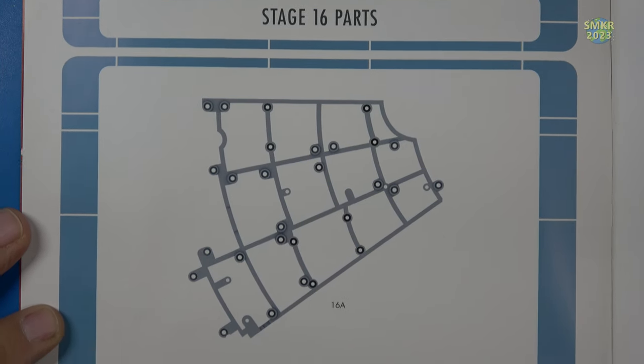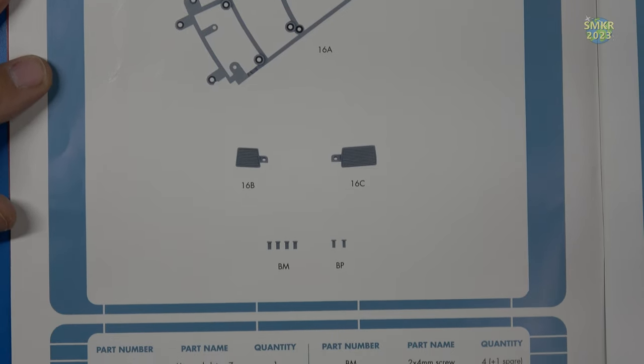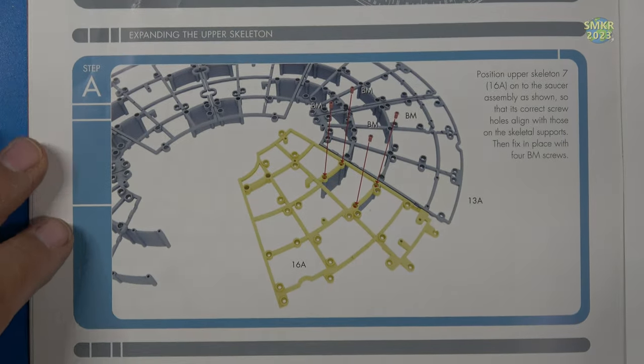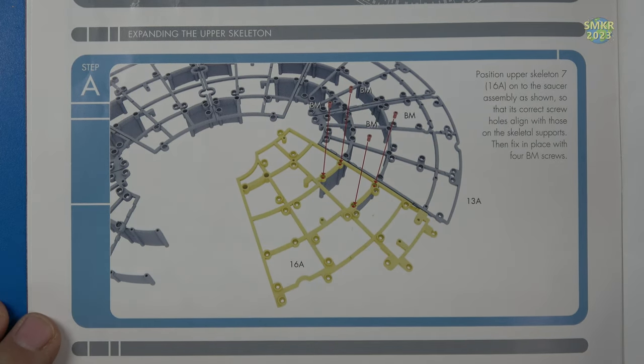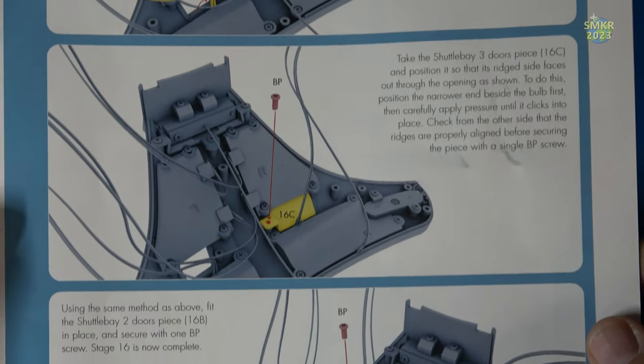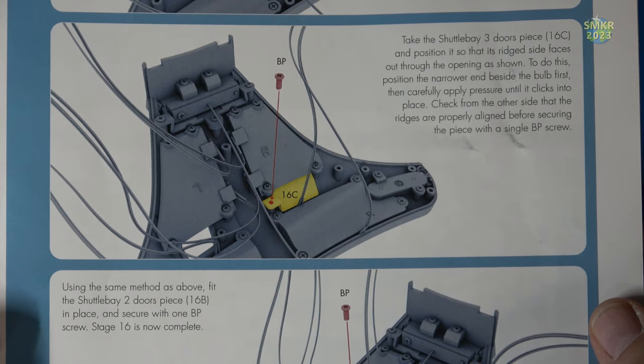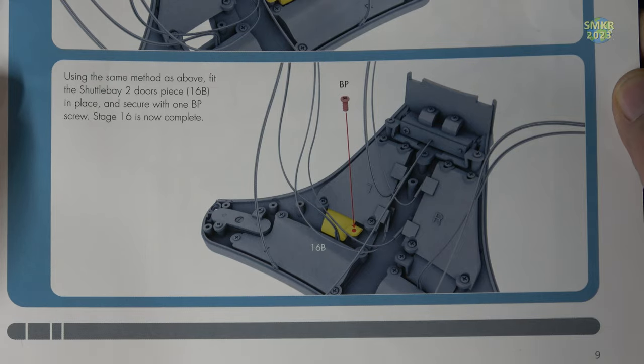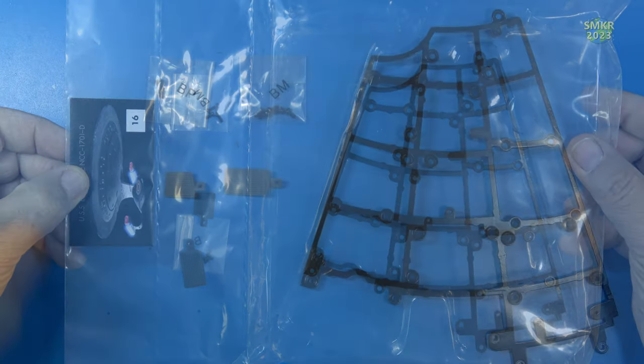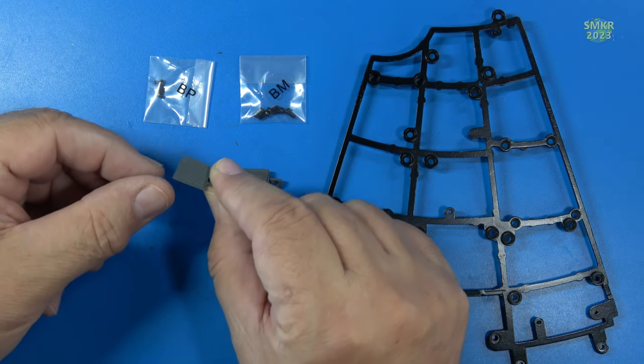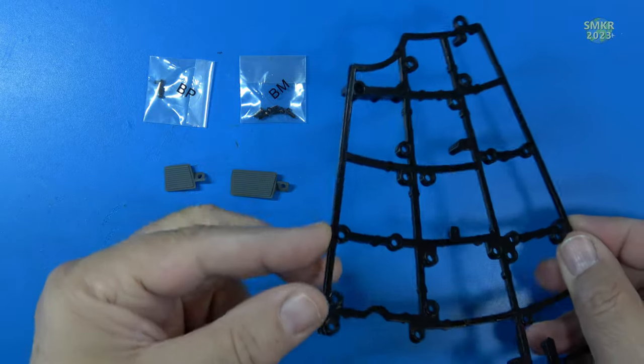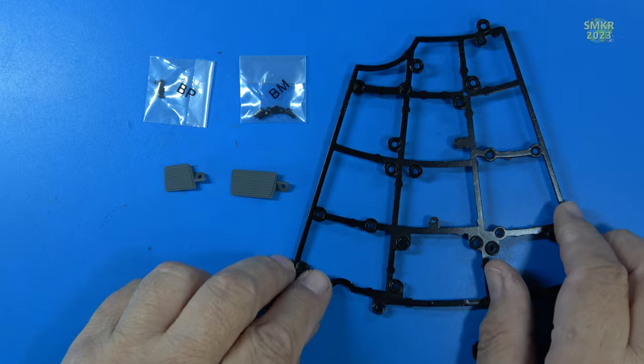Here's the parts for stage 16. More upper skeletal frames and a couple of supports. Here's the assembly. Put the frame on and put those two smaller supports to hold it together. Next, we install the shuttle bay doors. We need to move the wires out of the way here. Then slide in the shuttle bay doors a certain way so they snap in and won't affect the wiring. Let's get a closer look. Two plastic shuttle bay doors. We'll be putting those on here in a little bit. And the upper skeletal frame. Very nice there. BP and BM screws.